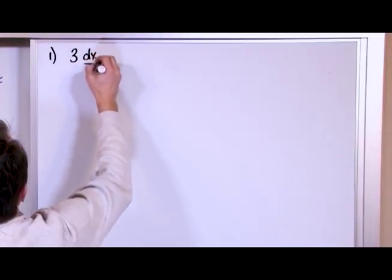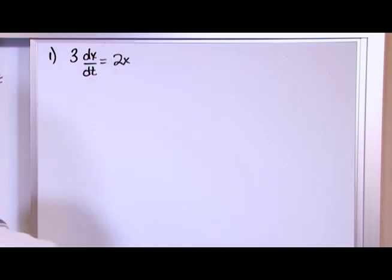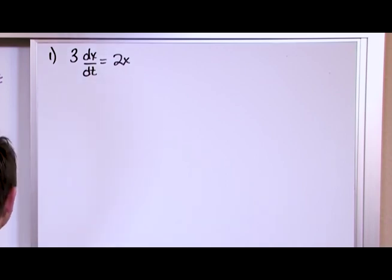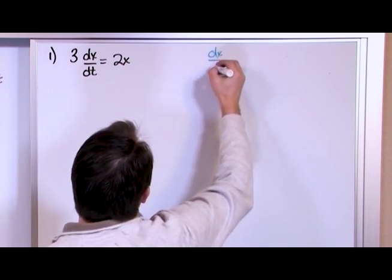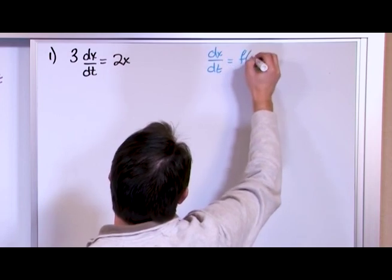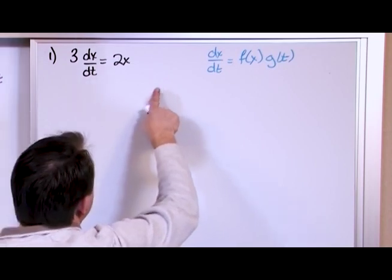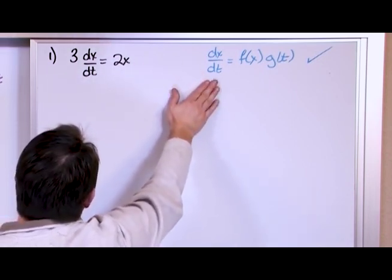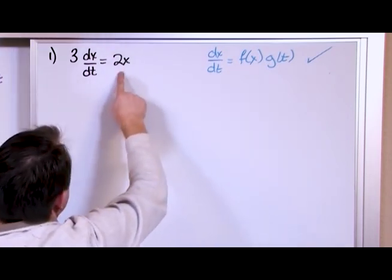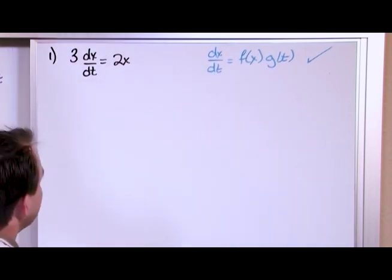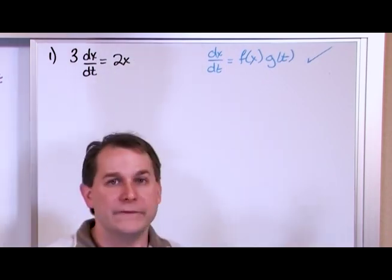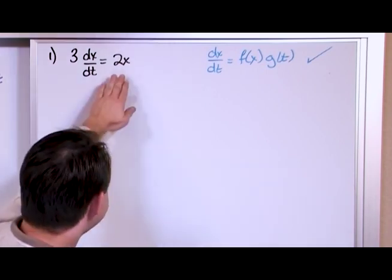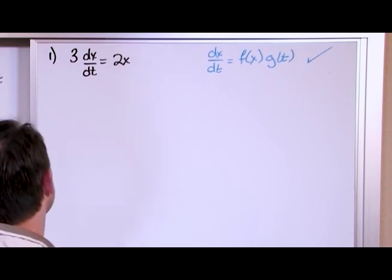Let's solve a problem. The differential equation is 3 times dx/dt equals 2x. The first thing to check: is it separable? Is it of the form dx/dt equals f(x) times g(t)? If I divide by 3, I get dx/dt equals 2/3 times x. That's certainly a function of x, and the function of t is just the constant 1 — a perfectly valid function of time. So yes, it fits the form.